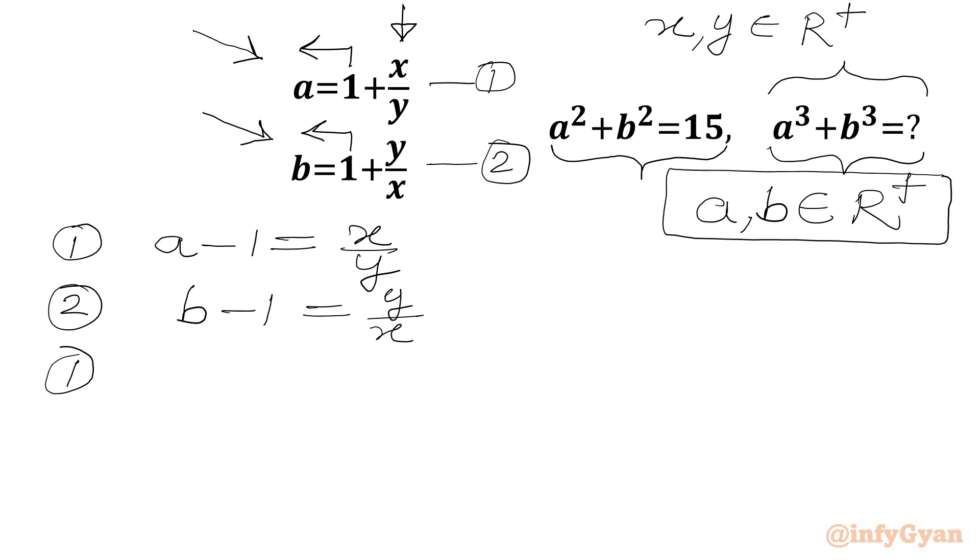Now we will multiply both as we have x over y and y over x in the right-hand side. Let's multiply (a minus 1) times (b minus 1) equals x over y times y over x. Now x and x, y and y will cancel, we will get 1 in the right-hand side.